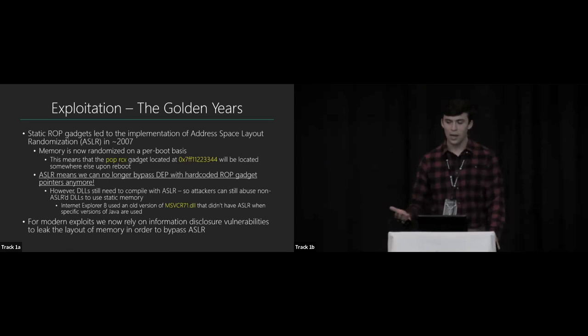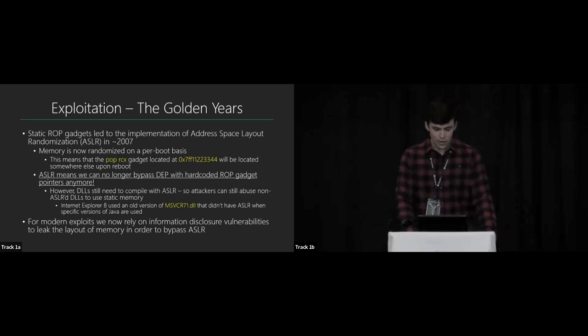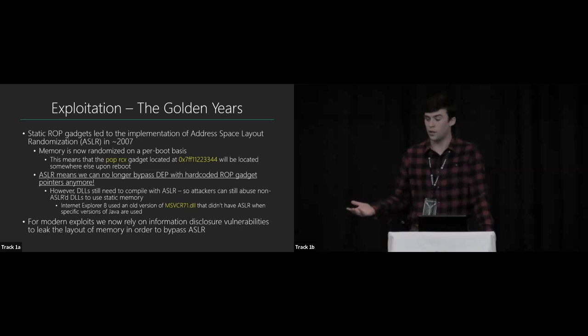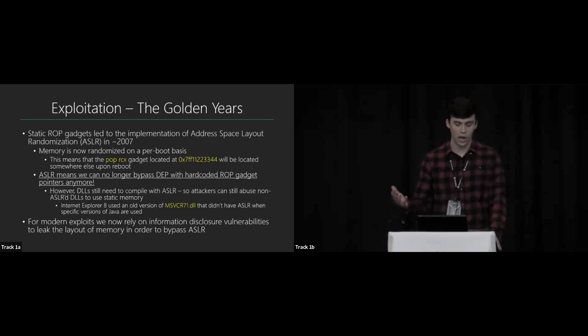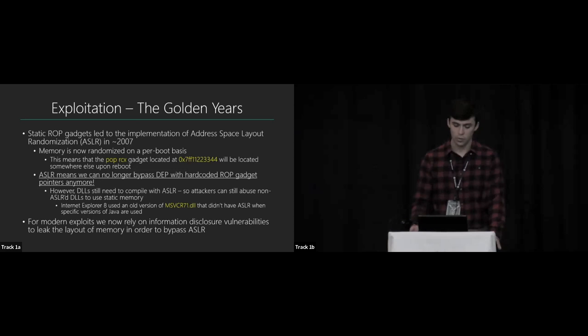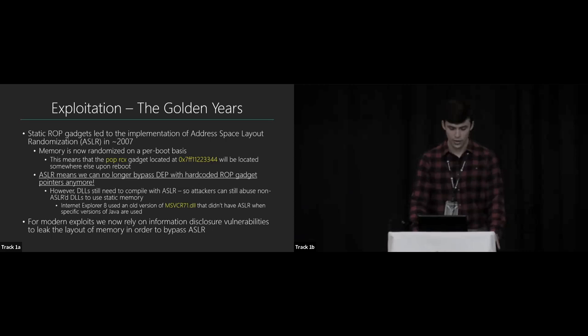With ASLR and DEP enabled, you first have to bypass ASLR in order to bypass DEP. There is a caveat: DLLs need to be compiled with ASLR. For a long time, attackers could abuse DLLs that weren't compiled with ASLR because the memory there was still static. A well-known case: Internet Explorer 8 used an old version of the Microsoft C runtime library when Java was enabled, which loaded a DLL into the process without ASLR. For modern exploits, we need to rely on information disclosure vulnerabilities to map or leak the layout of memory.